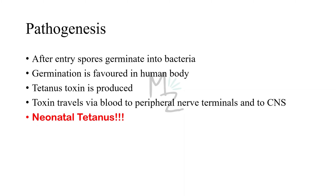After entering the human body, spores germinate into bacteria, a process favored by necrotic tissue and poor blood supply at the wound site. The bacteria release tetanus toxin, which is carried intra-axonally and travels via blood to peripheral nerve terminals and all the way to the central nervous system, causing tetanus. Neonatal tetanus is particularly dangerous, with a far higher mortality rate than adult tetanus.